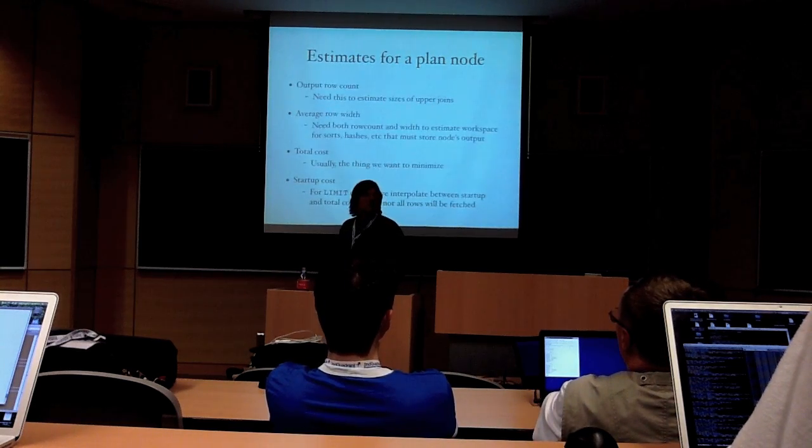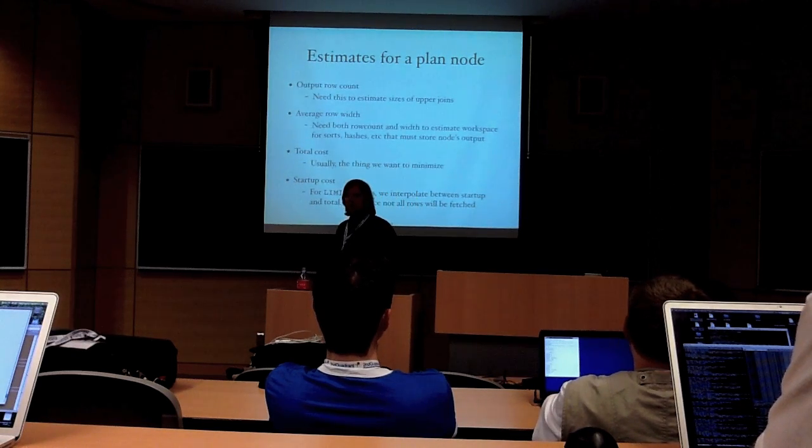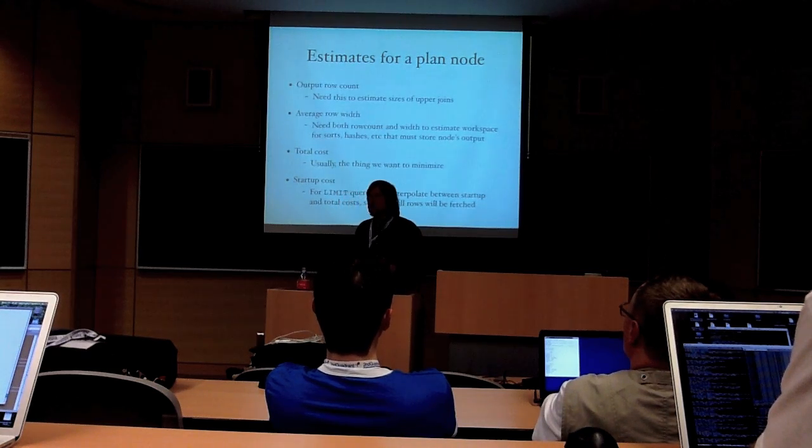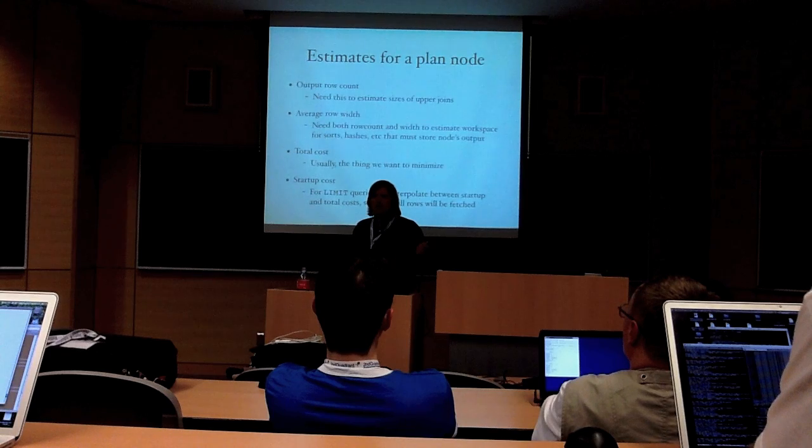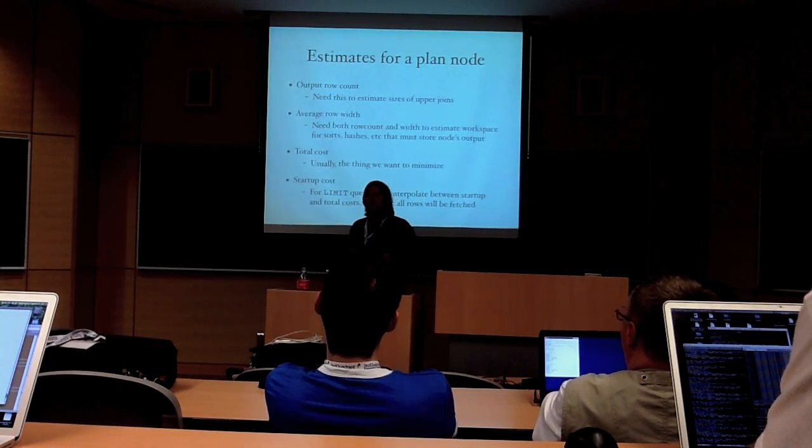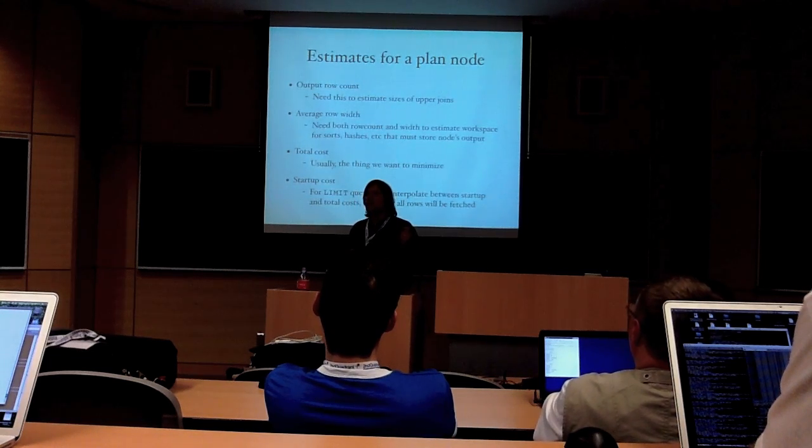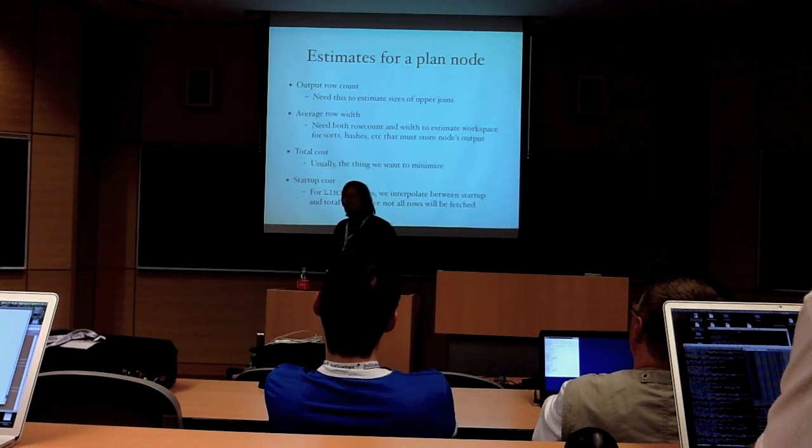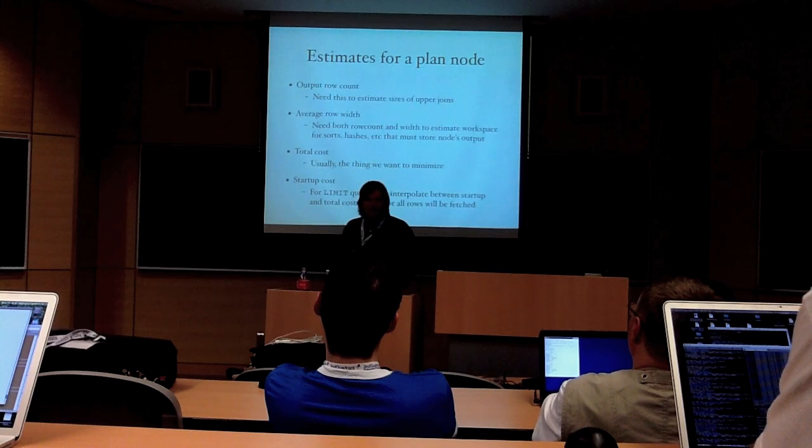You know, there are also some estimates that the planner makes for each plan node. These should look pretty familiar to you if you've ever seen an explain output, but we need to estimate the output row count because we will need that in making estimates for any higher-level joins that happen. We estimate the average row width because if we're going to have to figure out how much workspace might be needed for a sort or hash above that node, we're going to need a product of those two numbers. And, of course, the total cost is a thing we're trying to minimize. So, of course, we would like to know that.